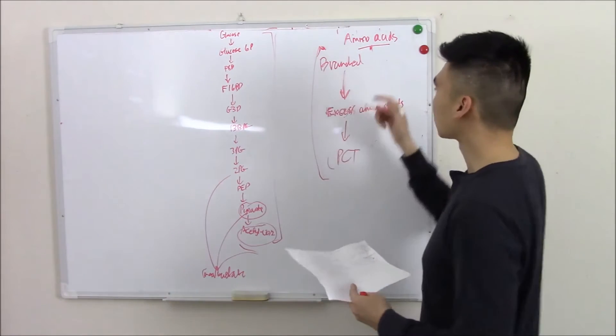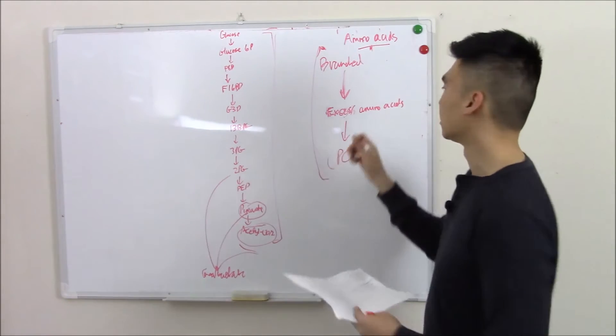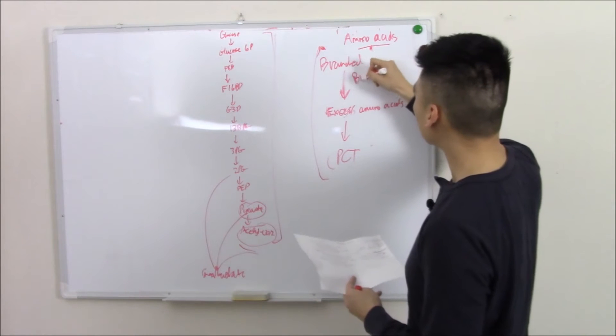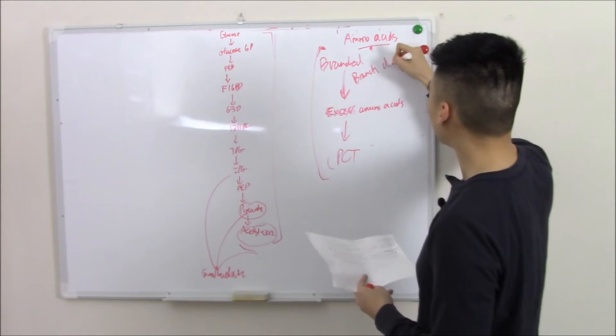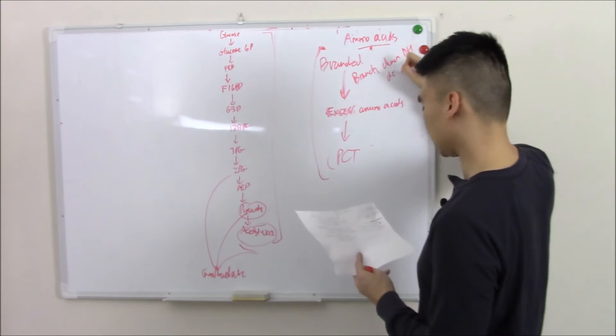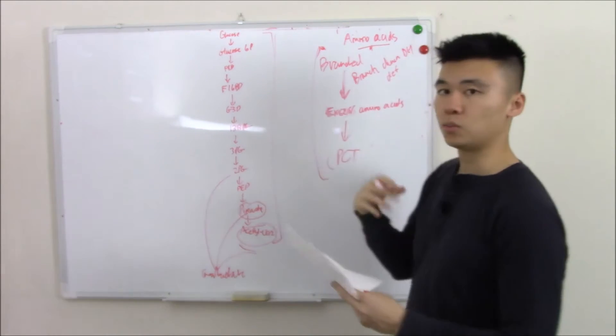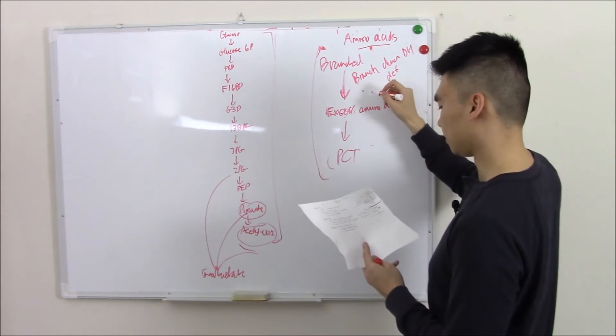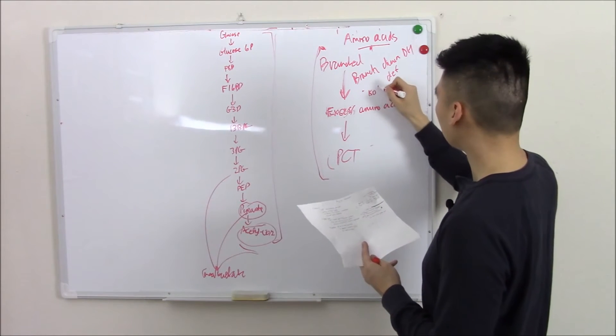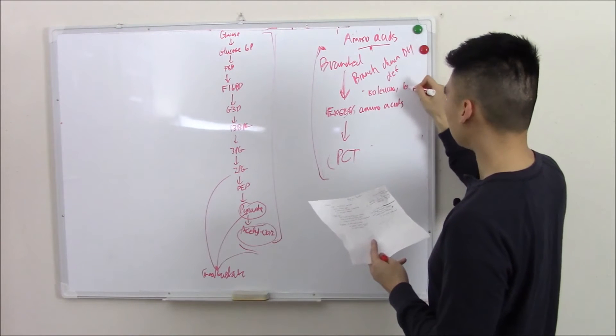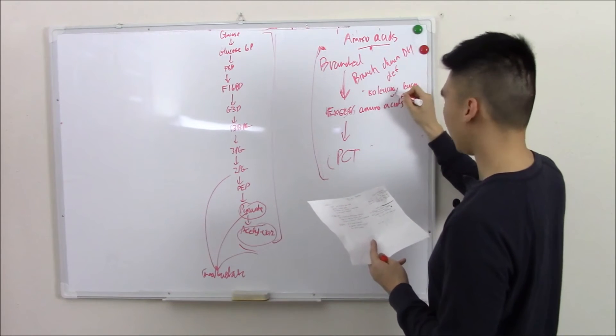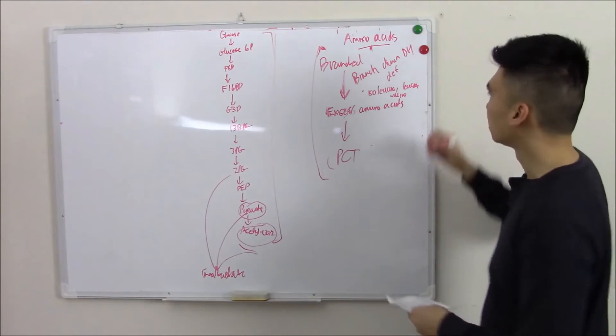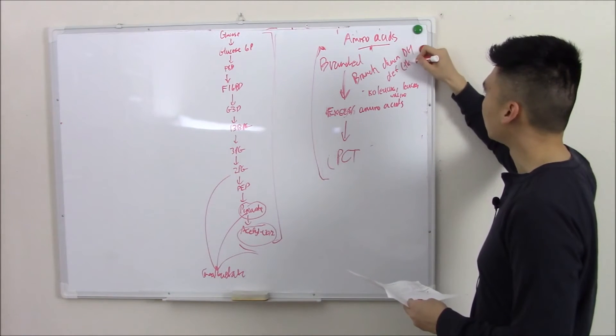Well, the first part, breaking branched amino acids into workable amino acids, if you have something called branched chain dehydrogenase deficiency, you can't break branched amino acids. And those amino acids are your isoleucine, your leucines, and your valine. Very important to note...